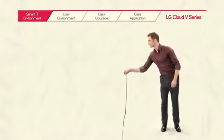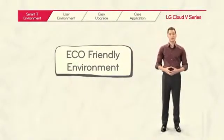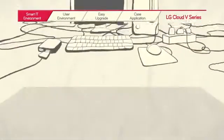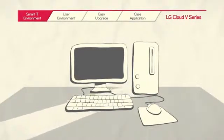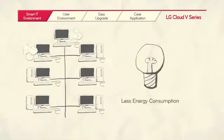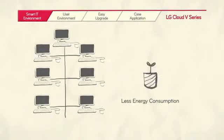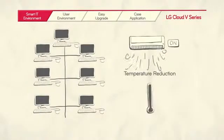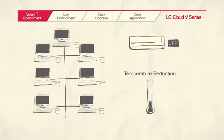Lastly, the LG Cloud V Series creates an eco-friendly work environment. The system requires just a few cables to connect the IT equipment, allowing more efficient space management at the office. In addition, LG Cloud V Series consumes far less energy than the conventional desktop. Furthermore, the absence of a hard disk drive and fan enables the LG Cloud V Series to help lower the office temperature. This, in turn, reduces the need for air conditioning, thereby creating a pleasant and eco-friendly work environment.